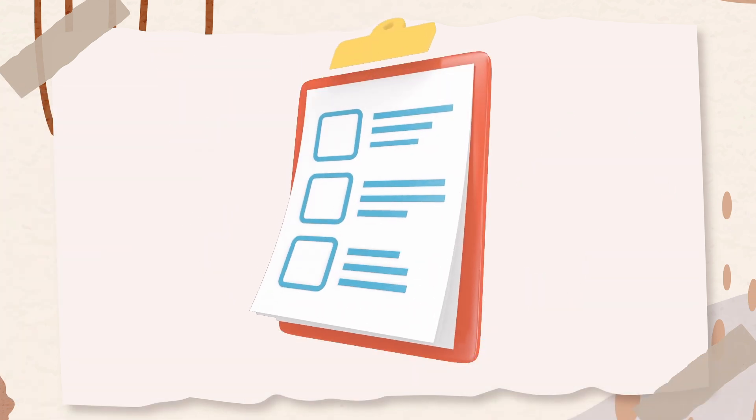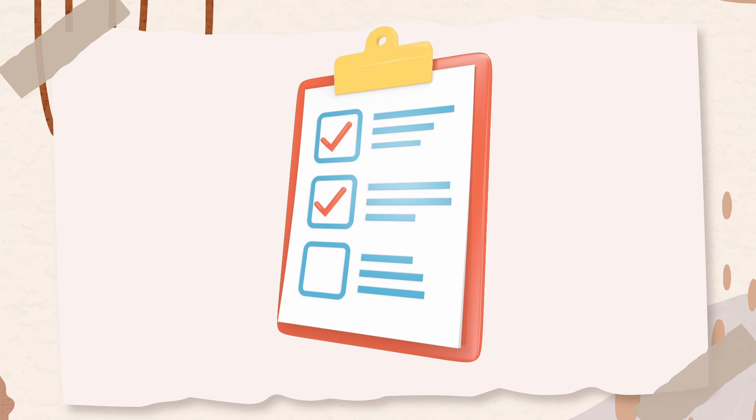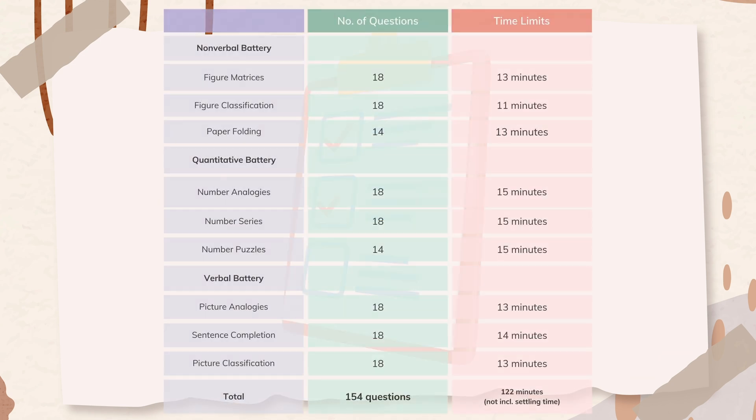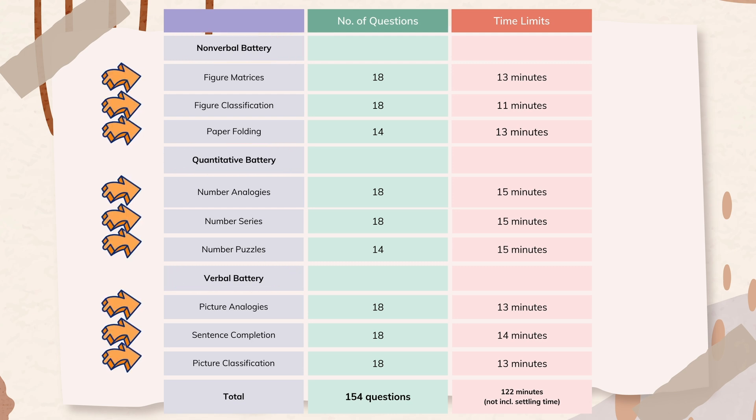Before we jump into the sample questions, let's quickly go over the test structure. The CogAT is divided into three main batteries: nonverbal, quantitative, and verbal. Each battery is further broken down into three subtests.